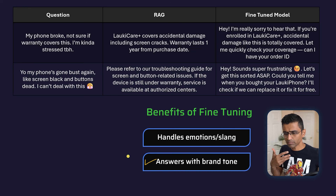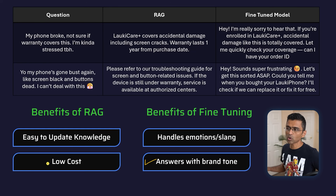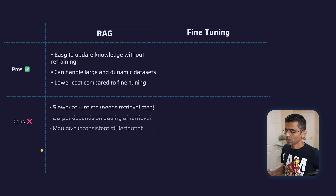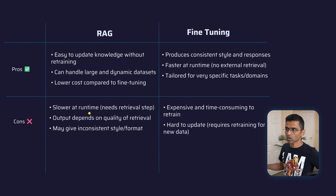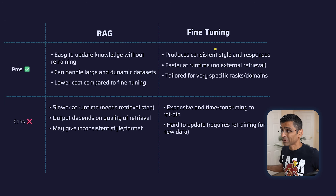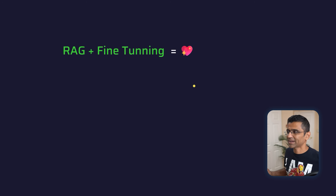Overall, fine-tuning gives the benefit of handling emotion and slang, answering with brand tone, and producing more precise answers. RAG's benefit is that it is low cost. To summarize the pros and cons: RAG is cheap but fine-tuning produces better answers. So what people in the industry do is combine both RAG and fine-tuning.